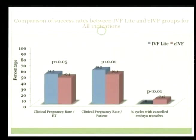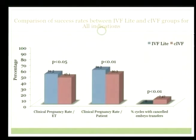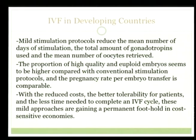Looking at the success rates between IVF light and conventional IVF groups across all indications — initially we started with poor responders, then included patients with previous IVF failures, then older age groups, and the fourth group added to IVF light was hyper-responders — when we compare all groups together, the clinical pregnancy rate per patient can reach up to 58%, from June 2010 to 2012. Mild stimulation protocols reduce the mean number of days of stimulation, the total amount of gonadotropins used, and the mean number of oocytes retrieved. The proportion of high-quality embryos seems to be higher, and the pregnancy rate per embryo transfer is comparable. With reduced cost, better tolerability, and less time needed, these mild approaches are gaining a permanent foothold in cost-sensitive economies.